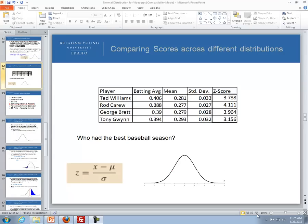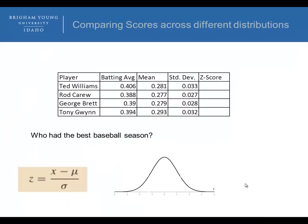Now we're going to compare scores or z-scores across different distributions. Here's an example of dealing with batting averages from baseball. These four baseball players: Ted Williams in 1941, Rod Carew in 1977, George Brett in 1980, and Tony Gwynn in 1994 had great batting averages.